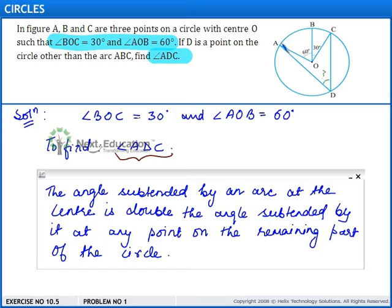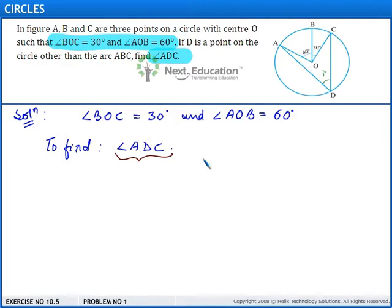So here the arc AC subtends angle AOC at the center and angle ADC on the remaining part. According to the theorem, angle AOC is equal to 2 times angle ADC.